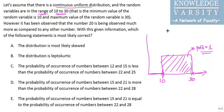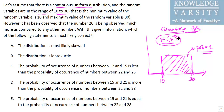Many times, continuous uniform distributions are represented by their cumulative probability. We represent this as F(X), which means the cumulative probability that the random variable will be less than or equal to X. That is the notation of F(X). Now let's look at the question.